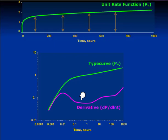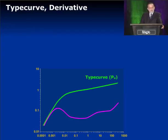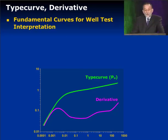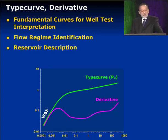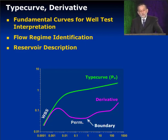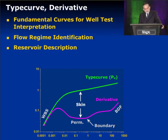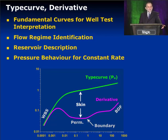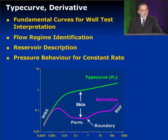What do we do with all this? This type curve — the unit rate function with the derivative — are the fundamental curves for well-test interpretation. We use them for identifying all our flow regimes: whether our data is in wellbore storage, where permeability can be calculated from, whether we've seen any boundaries, if it's boundary-dominated flow, and what the damage is on the well — the skin. All this we can tell from the type curve. But this type curve is for a constant rate situation.